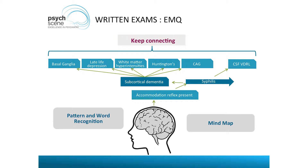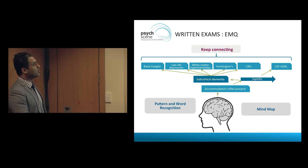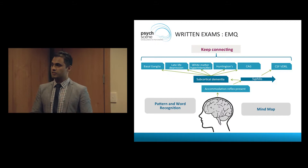For example, you've got a couple of buzzwords: accommodation reflex present. Where does that lead to? ARP - Argyle Robertson pupil. Syphilis. Now, accommodation reflex present is not necessarily linked to subcortical dementia, but syphilis is linked to subcortical dementia. That goes into subcortical dementia areas of the basal ganglia. So neuroanatomy comes in.